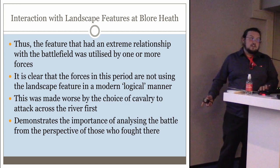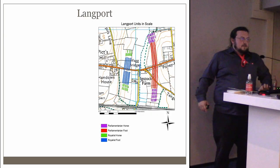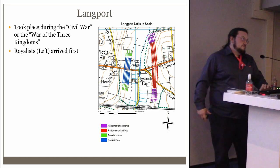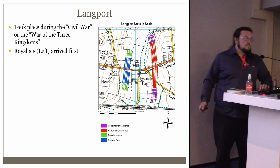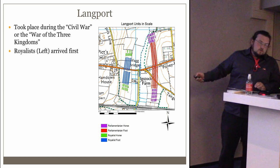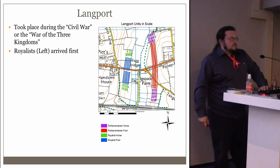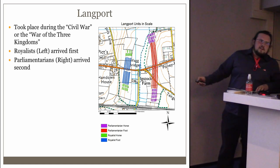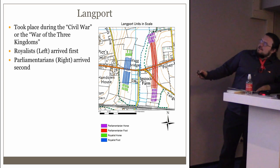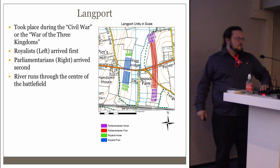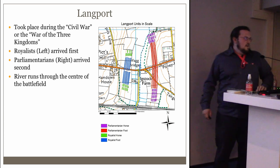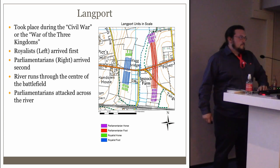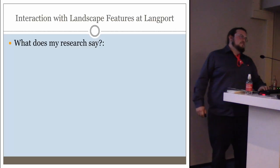The Battle of Langport, from the Civil War — the War of the Three Kingdoms. The Royalists arrived first and fortified the river. The Parliamentarians — the significantly larger force — arrived second. The river runs through the centre of the battlefield. The Parliamentarians attacked across the river and the Parliamentarians won.